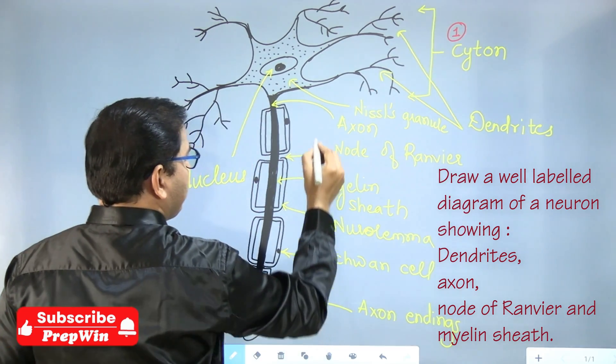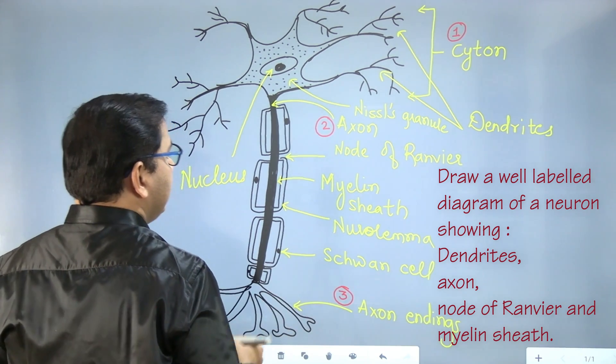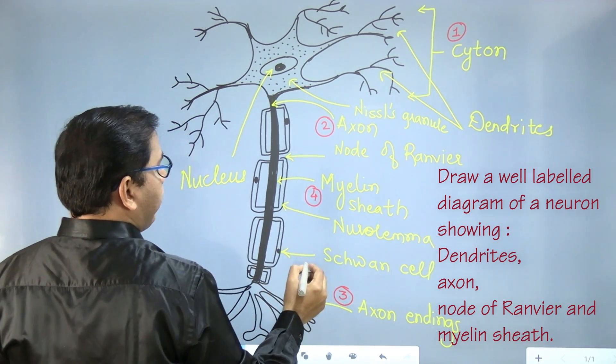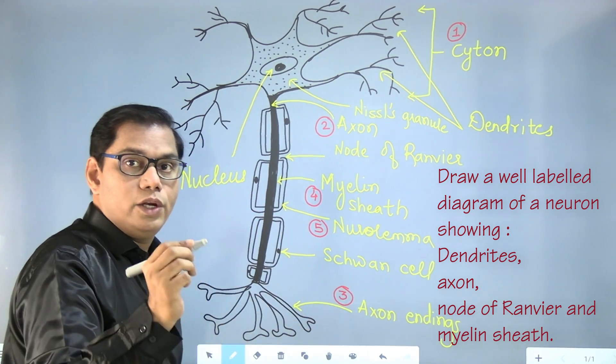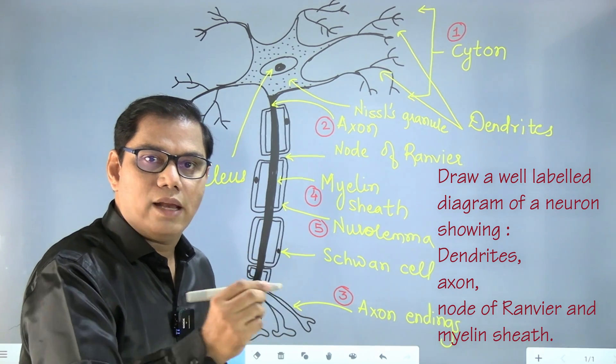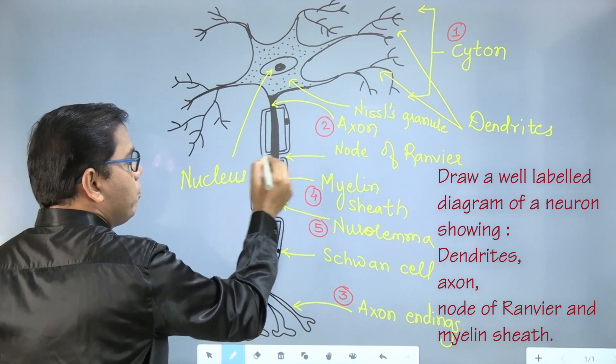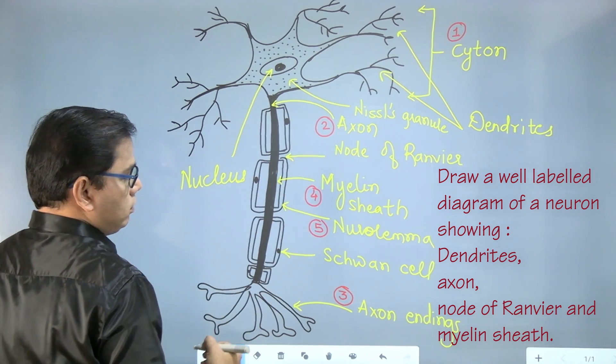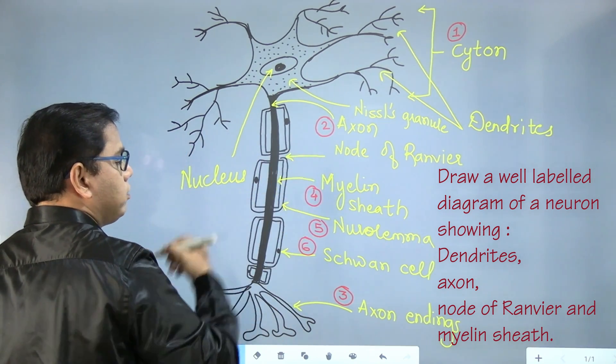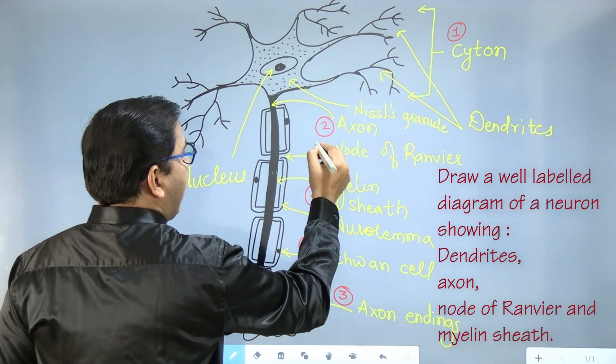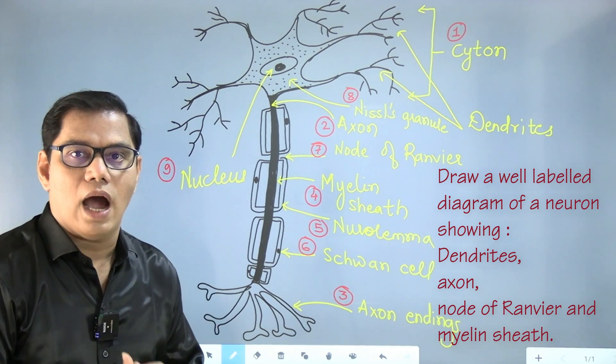So these are the parts which you have to remember: cytone or cell body, then axon, and third is the axon ending. Then we have myelin sheath, neurolema. The outer covering of the myelin sheath is called neurolema. Then Schwann cell which is responsible for the production or formation of the myelin sheath, then node of Ranvier, Nissel granule, and nucleus. So this is our diagram.